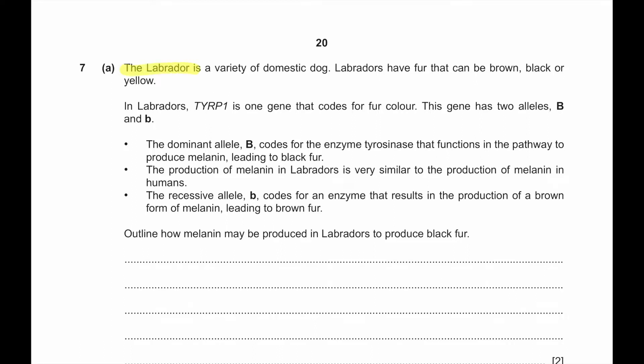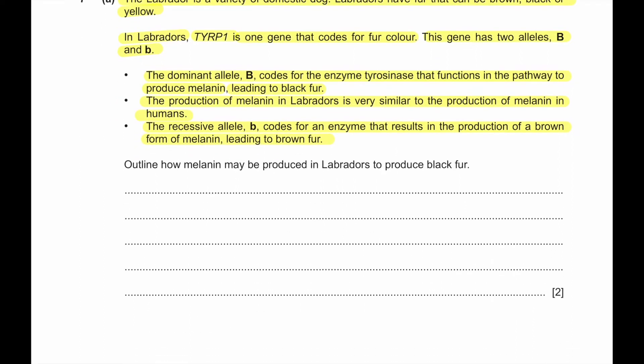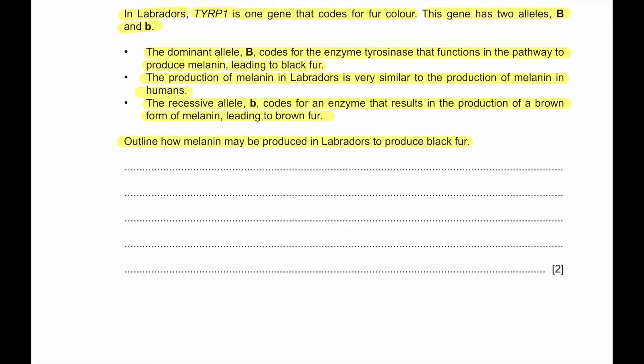Question 7a: The Labrador is a variety of domestic dog. Labradors have fur that can be brown, black, or yellow. TYRP1 is one of the genes that codes for fur color with two alleles, capital B and small b. The dominant allele capital B codes for the enzyme tyrosinase that functions in the pathway to produce melanin leading to black fur. The recessive allele small b codes for an enzyme that results in brown melanin leading to brown fur. Outline how melanin may be produced in Labradors to produce black fur. Tyrosine has to be converted to dopaquinone, and then dopaquinone will be converted to melanin in the melanocyte cell.